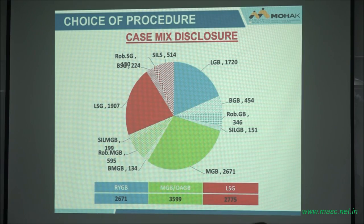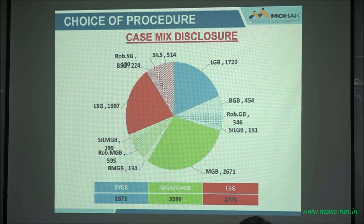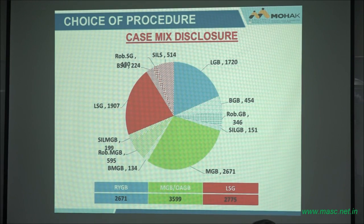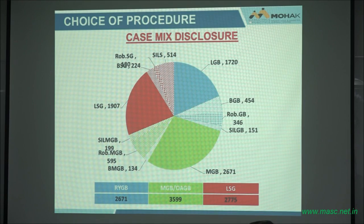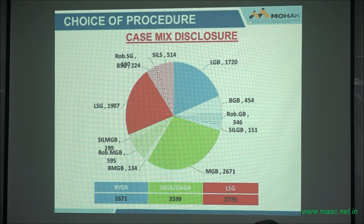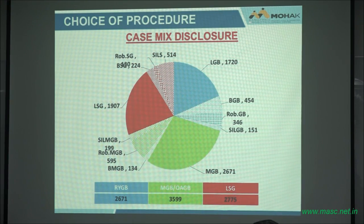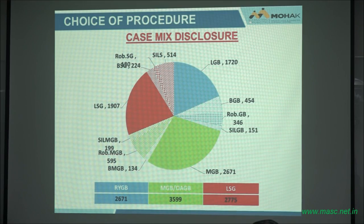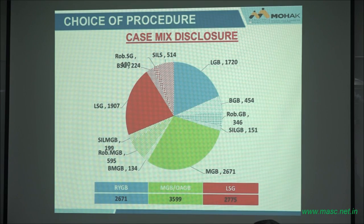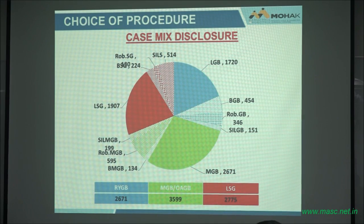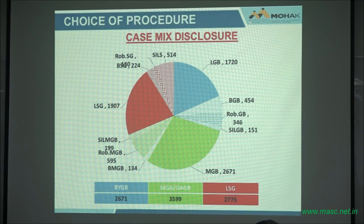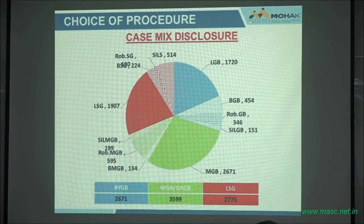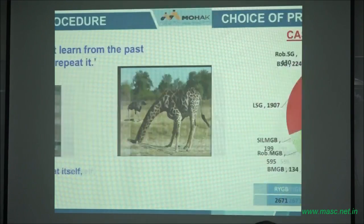Last year we did 1,700 cases, and this year we are approaching about 1,600 cases. The shift has changed — we're doing more one-third sleeve, one-third gastric bypass, and one-third mini-gastric bypass. We're also doing the banded versions, modifications of these procedures.